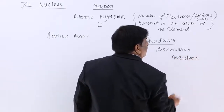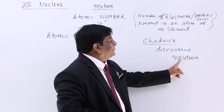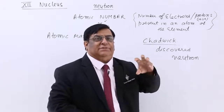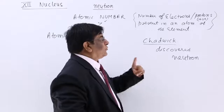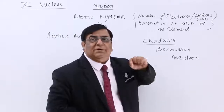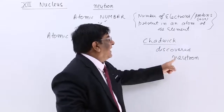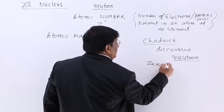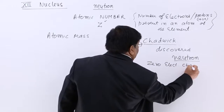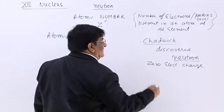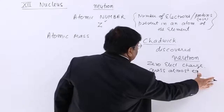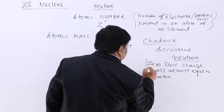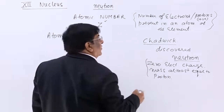Neutron — 'neutral' means it has no charge, and '-on' is the family name of all members of the nucleus. So proton was one member, and neutron is now another member discovered by Chadwick. Its characteristics: zero electrical charge — it is neither positive nor negative — and its mass is almost equal to that of the proton. This was the neutron, and it is located in the nucleus.